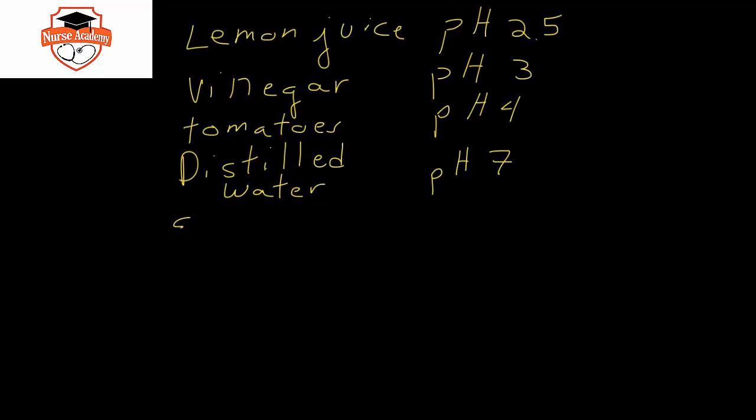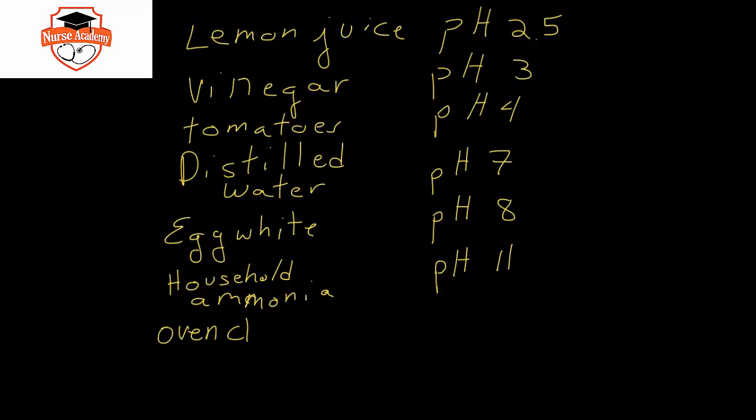Then if we look at egg white, that would be a pH around 8. Ammonia, household ammonia, has a pH around 11. And oven cleaner, oven cleaner is lye, which is essentially sodium hydroxide. And that is around 13. It has a pH around 13 to 14, depending on how concentrated it is.